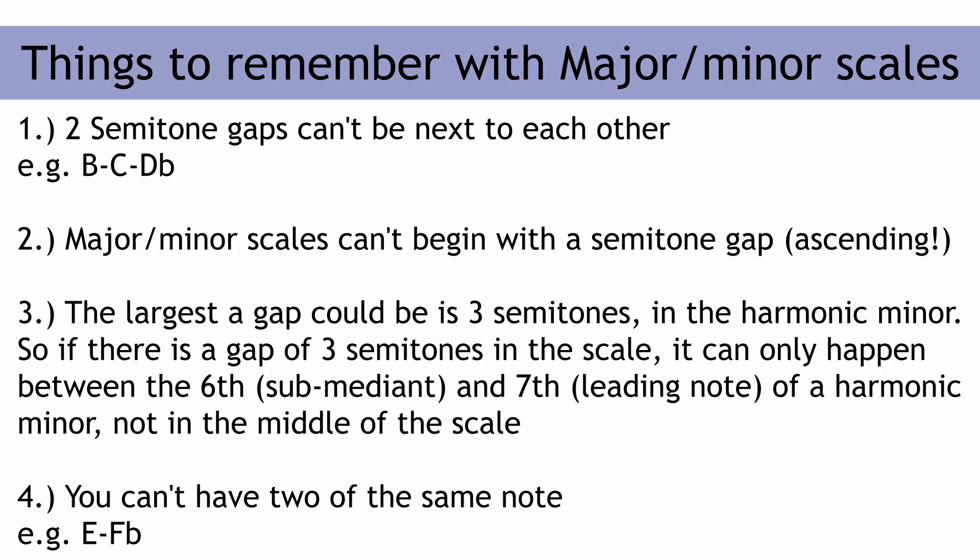Some good points to remember when asked this kind of question: Two semitone gaps can't be next to each other. A scale couldn't for example go B to C to D flat. Don't forget I'm not talking about chromatic scales or modes right now. This is just majors and minors for the sake of these types of questions. When starting a scale it can't begin with a semitone. Of course I mean from the bottom going up as a semitone can exist at the top coming down. The largest gap that could be is three semitones which occurs between the submediant and leading note of the harmonic minor. A gap of three semitones can't happen anywhere else in the scale nor can there ever be a gap larger than three semitones. And finally you can't have two of the same note in a scale, for example E going to an F flat.